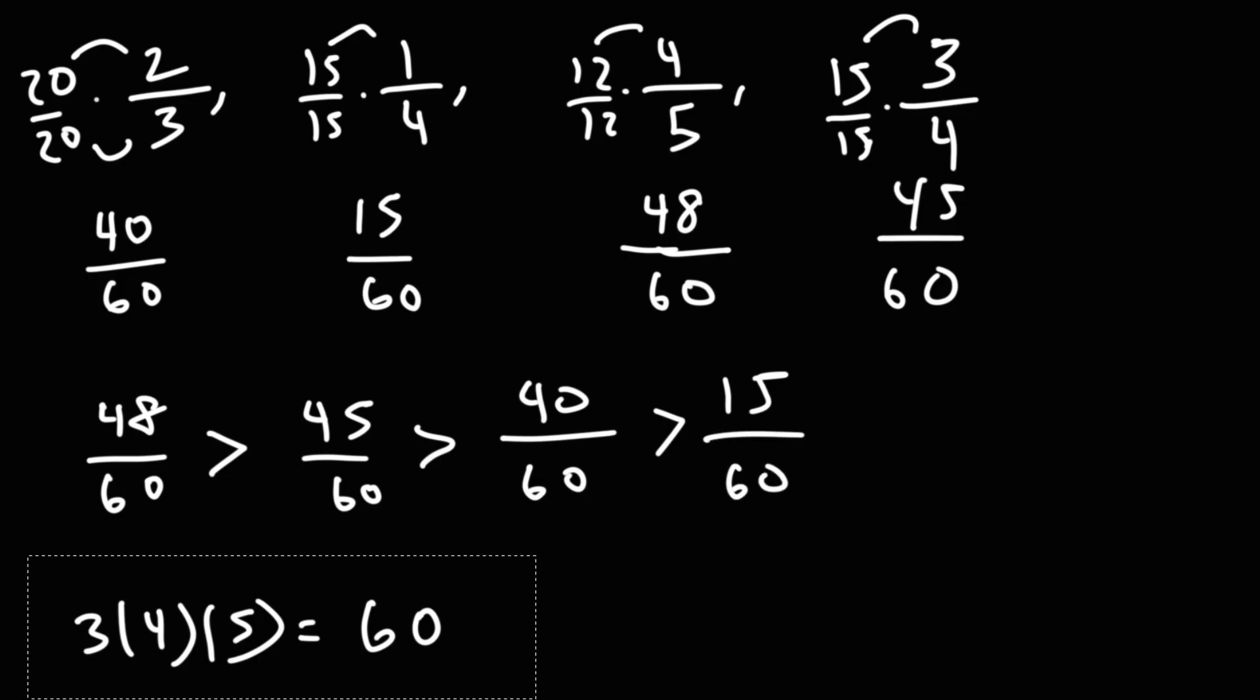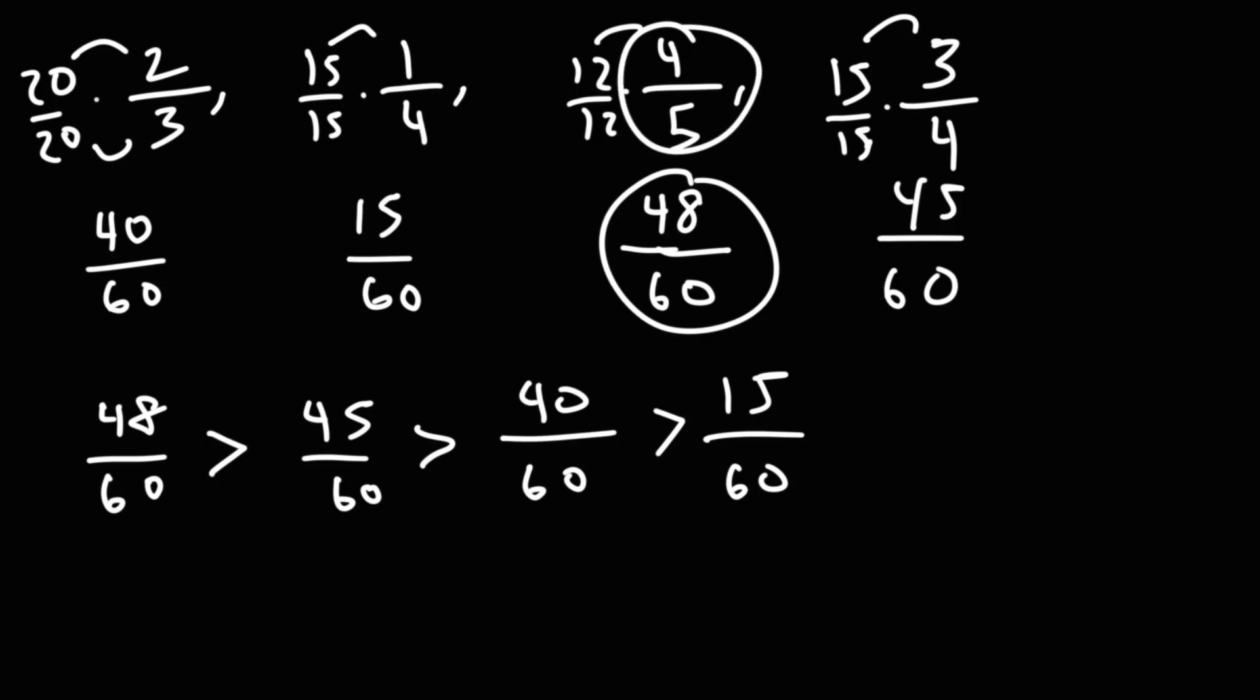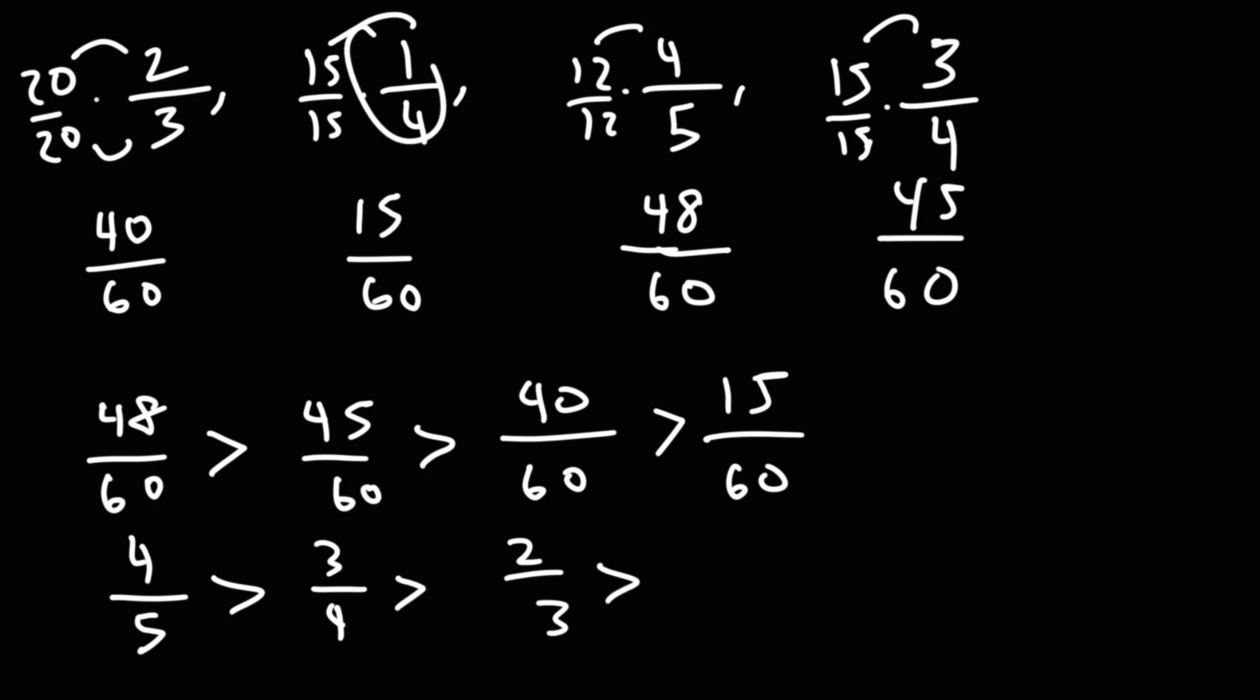So now we need to reduce these fractions back to their original form. 48 over 60 came from 4 over 5, so let's put 4 over 5 here. 45 over 60 came from 3 fourths, so that's next. 40 over 60 came from 2 over 3, and the last one, 15 over 60, came from 1 over 4. So this is our answer.